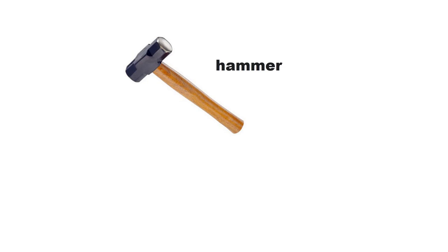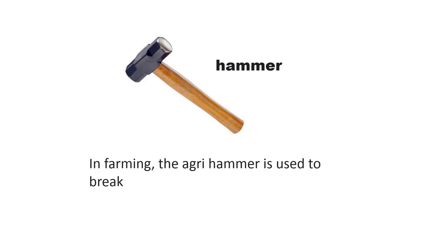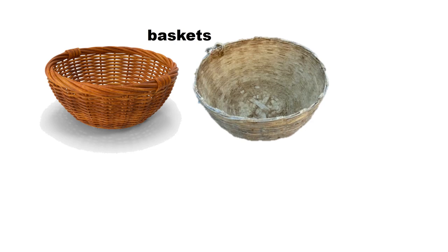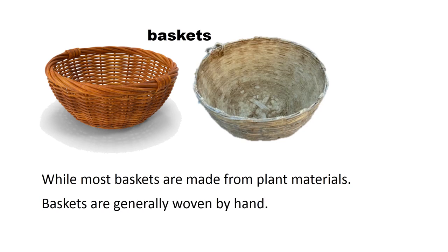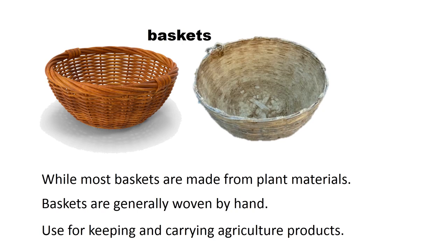In farming, the agricultural hammer is used to break up hardened soil. Baskets, while most are made from plant materials like bamboo, are generally woven by hand. Baskets are used for keeping and carrying agricultural products.